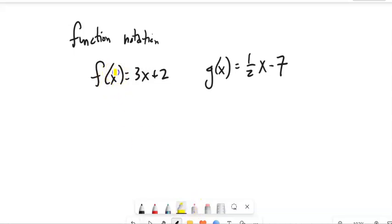First off, the x itself, this is just a placeholder. That's my input. And then f, the f itself stands for this procedure of going 3 times the input plus 2.